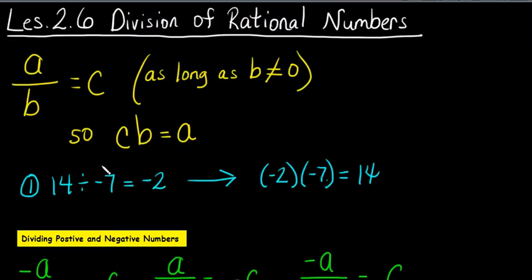I'll show you an example. 14 divided by negative 7 equals negative 2. Well, if negative 2 is C, and I multiply it by B, which would be negative 7, negative 2 times negative 7 equals 14, which is A.